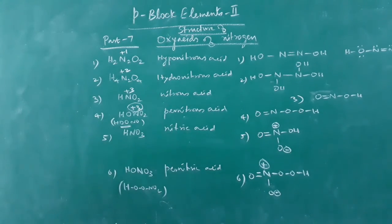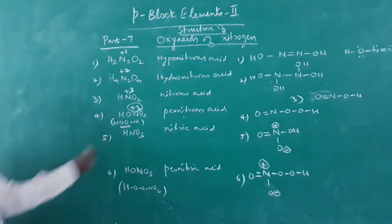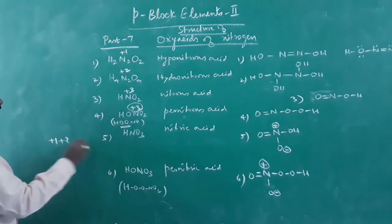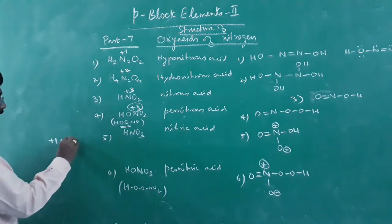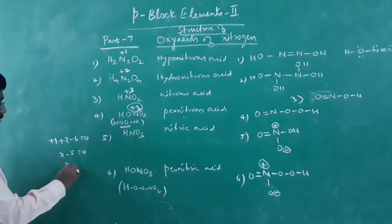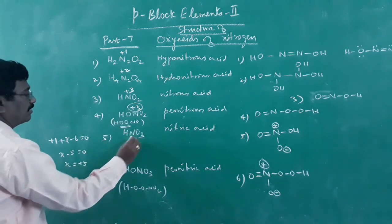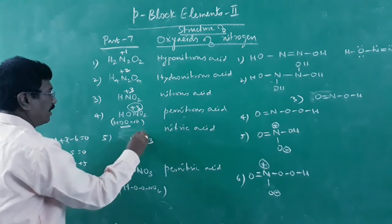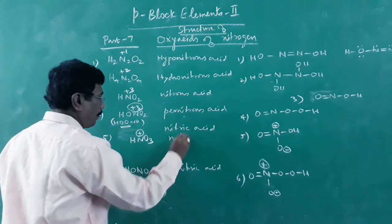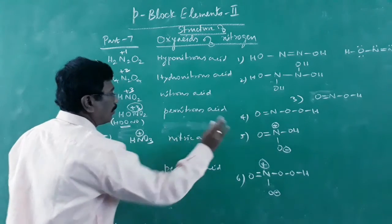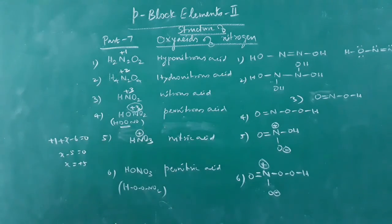Students may get confused how both nitrous acid and pernitrous acid give +3. It is because the two peroxide oxygen atoms carry −1 oxidation state, not −2. For nitric acid HNO3: (+1) + x + 3(−2) = 0, x − 5 = 0, x = +5. Oxidation state of nitrogen in nitric acid is +5.